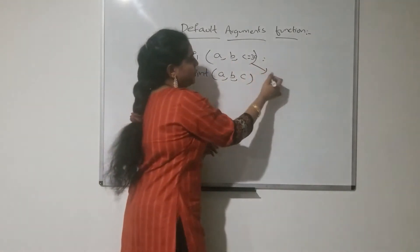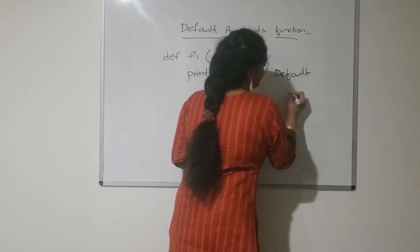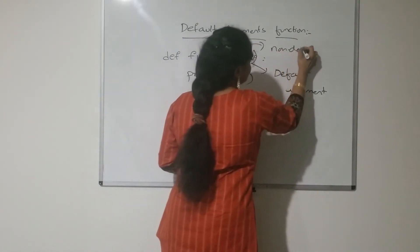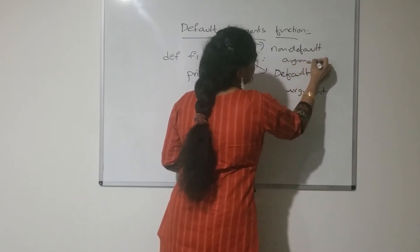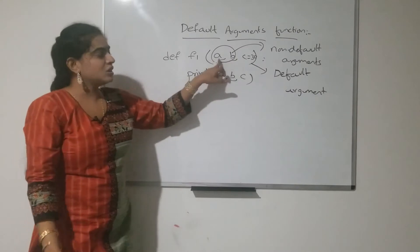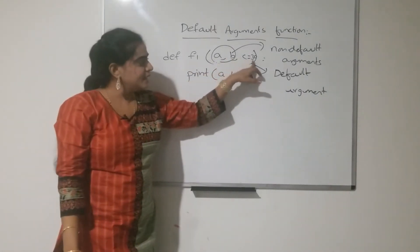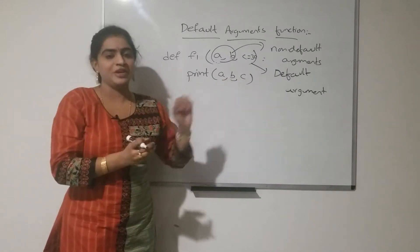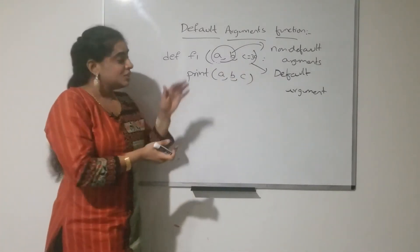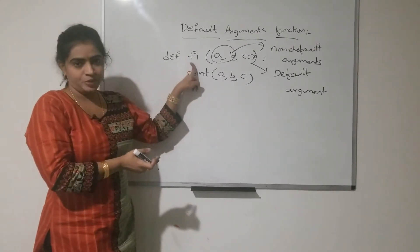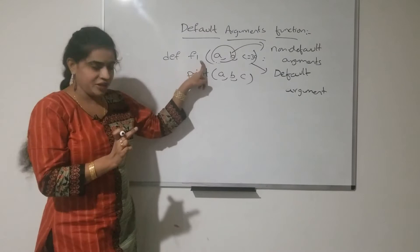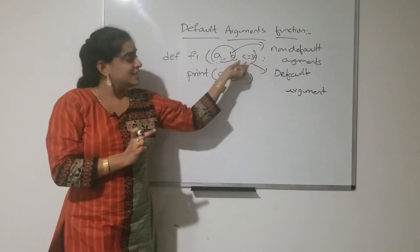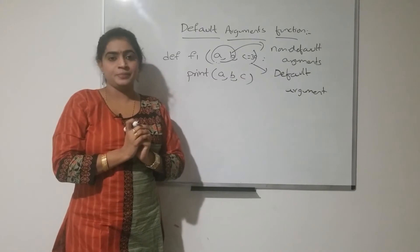Here, c=30 is said to be a default argument, and a and b are said to be non-default arguments because we have not initialized those. Only c is initialized with 30. Initialization means assigning a value to that argument within the function definition, not in the function call. When you initialize some arguments using default values, that function is called a default argument function.